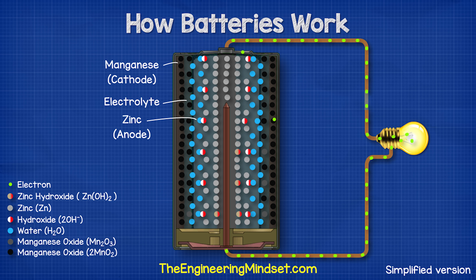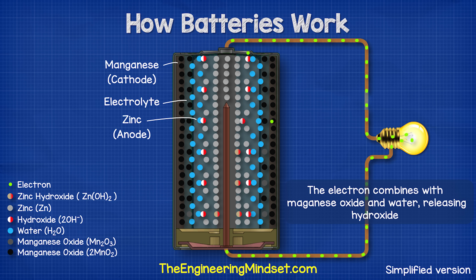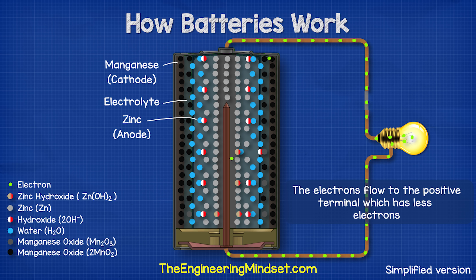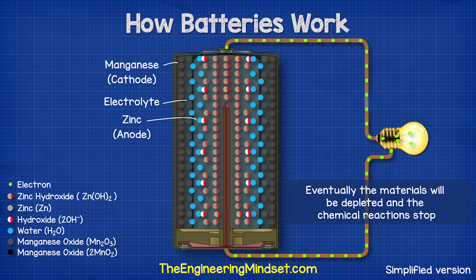To recap the chemical reaction: free electrons enter the battery through the positive terminal and combine with manganese oxide and a water molecule at the cathode, releasing a hydroxide ion into the electrolyte. The hydroxide ion passes through the separator and joins with a zinc atom to create zinc hydroxide, releasing electrons and a water molecule. The electrons flow through the wire toward the positive terminal, and the reaction repeats continuously. However, there's only a finite amount of material inside the battery — over time the chemical reaction becomes harder to sustain and eventually no more electrons flow. At that point the battery is depleted and must be disposed of.